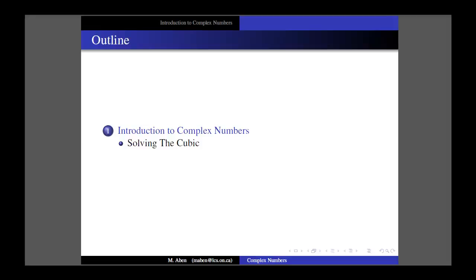This is going to be introducing the complex numbers and the history component. In fact, I'm never going to use the word 'complex numbers' after this introduction - we'll talk about that in Lesson 2. What I'm going to start with is solving the cubic, which is a type of equation I'll get to in a bit, and then how working with the square root of negative 1 - which at first glance doesn't seem to have much meaning - ends up helping us solve a cubic equation.